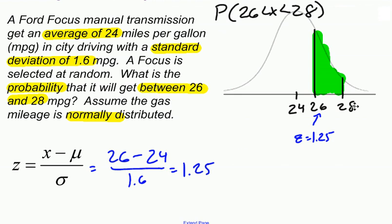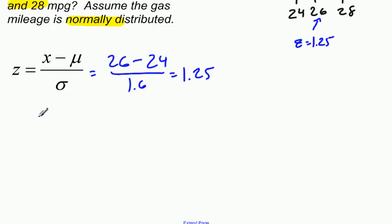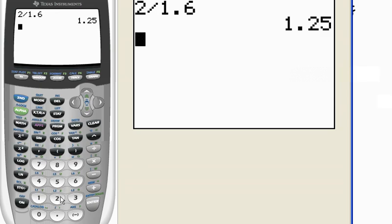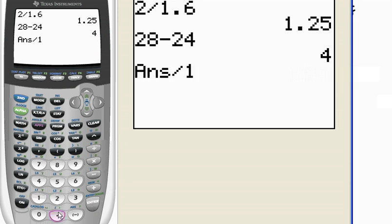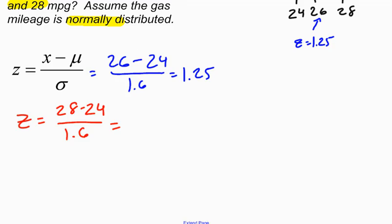Now let's go with 28. Give myself a little bit more room. And that would be z equals 28 minus the mean, which is 24, divided by 1.6. Again, I'm going to jump to my calculator. 28 minus 24, I really didn't need the calculator to get 4. Divided by 1.6 is 2.5. So here we go, 2.5 is the z-score for 28.